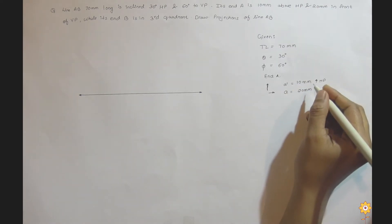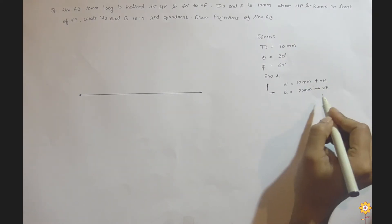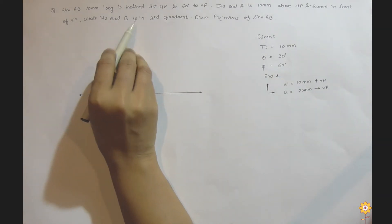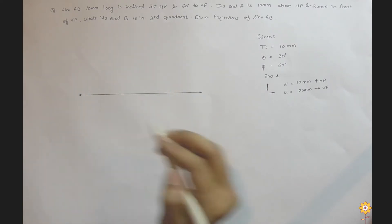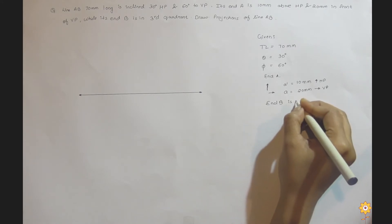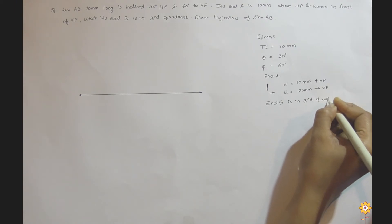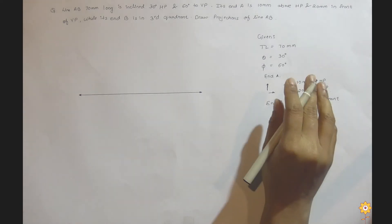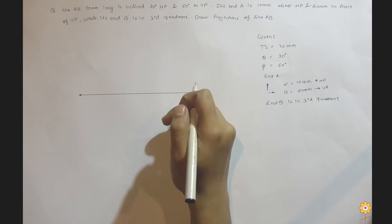A dash is 10 mm because HP is always associated with the front view and VP is associated with the top view. End B is in the third quadrant. In the third quadrant, the top view is above xy and the front view is below xy.